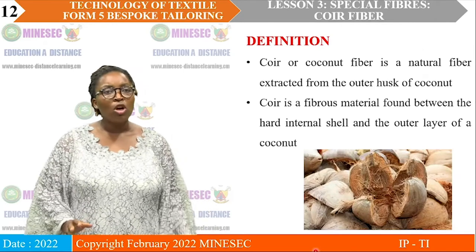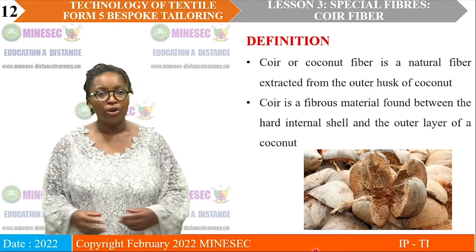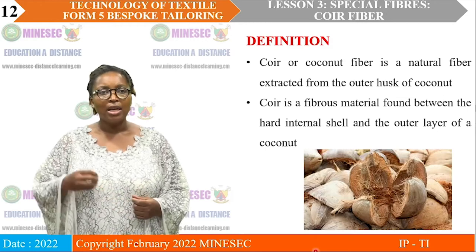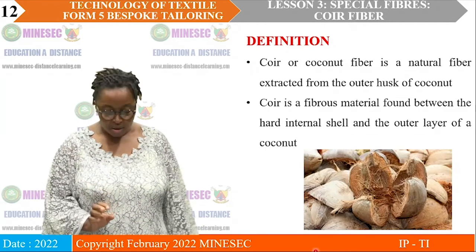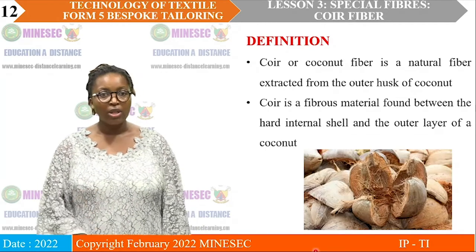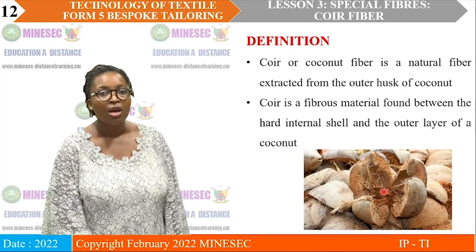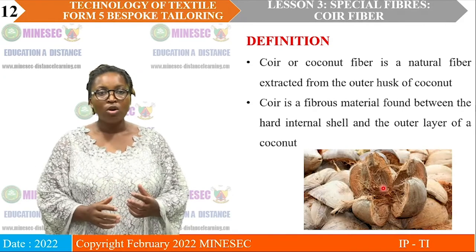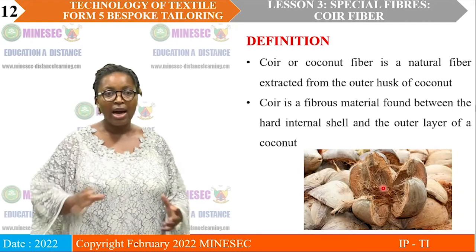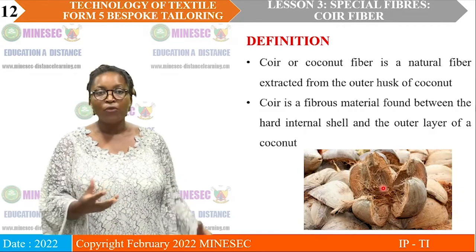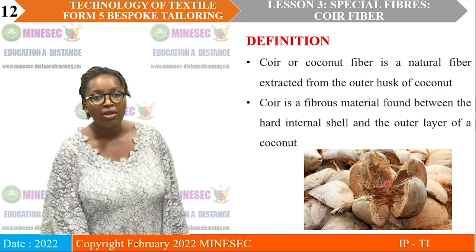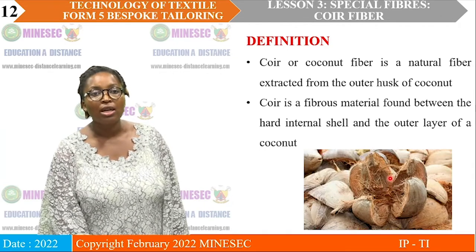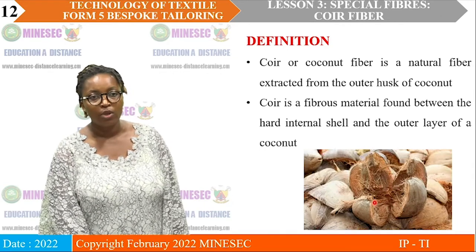Before we start, we must know what Koi is. Koi is a coconut fiber extracted from the outer husk of the coconut. This is the husk here. When you take the coconut and peel it, the fiber is found in the outer husk. When you have removed the hard shell, the outer husk is where you process the coconut fiber.